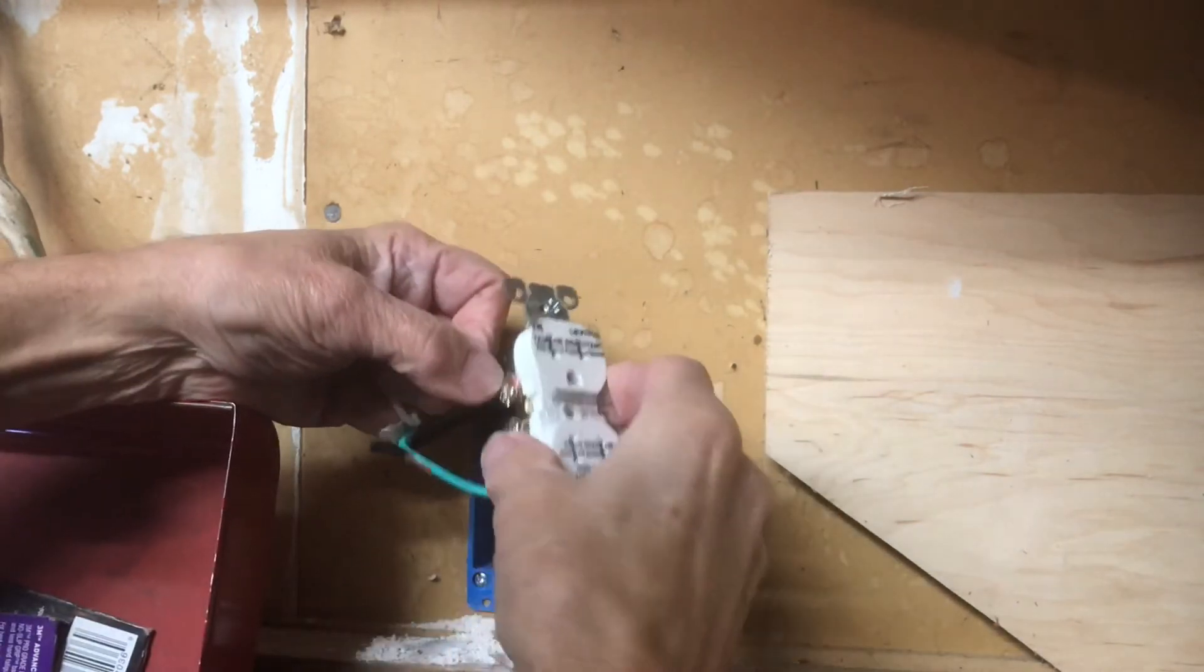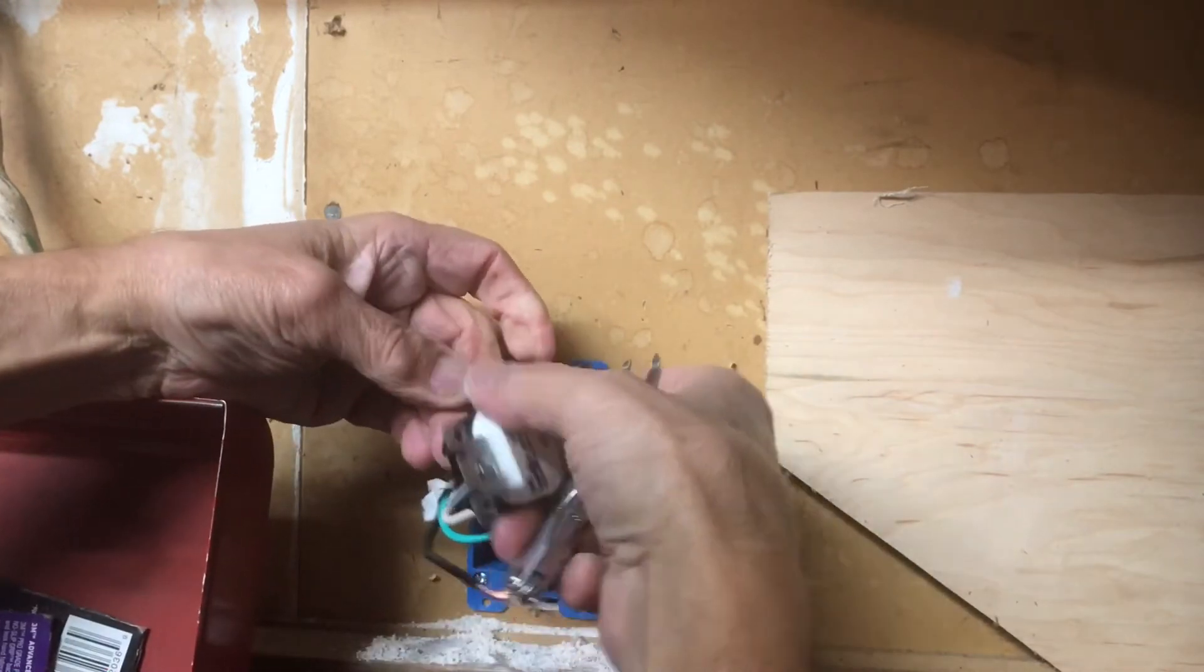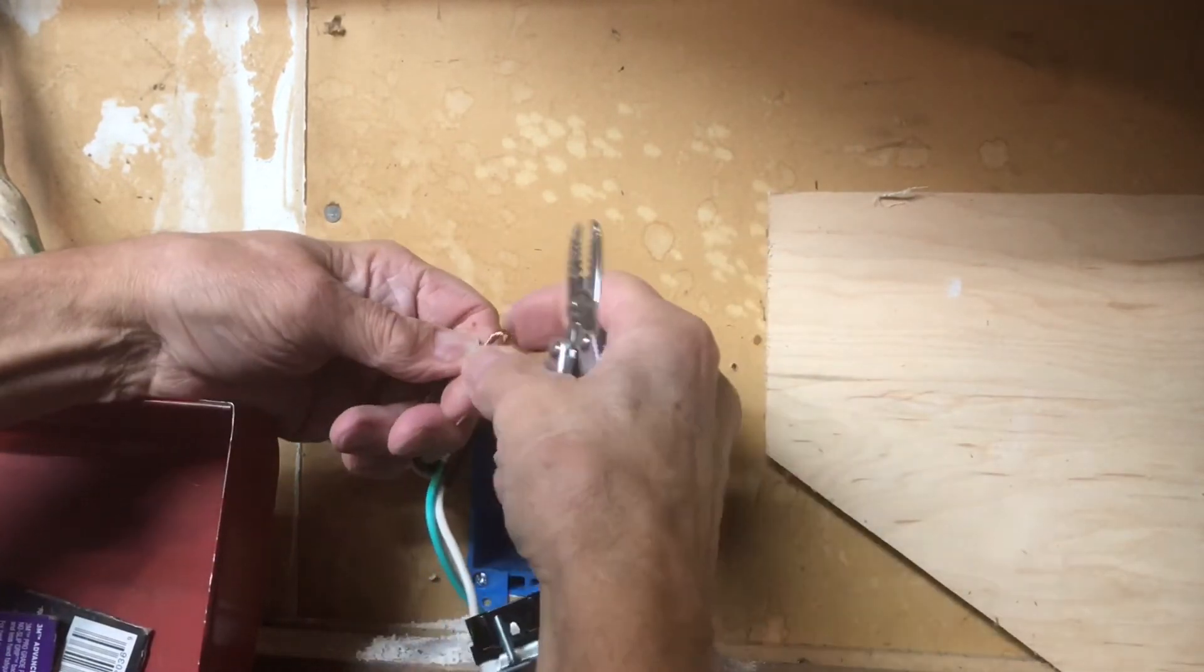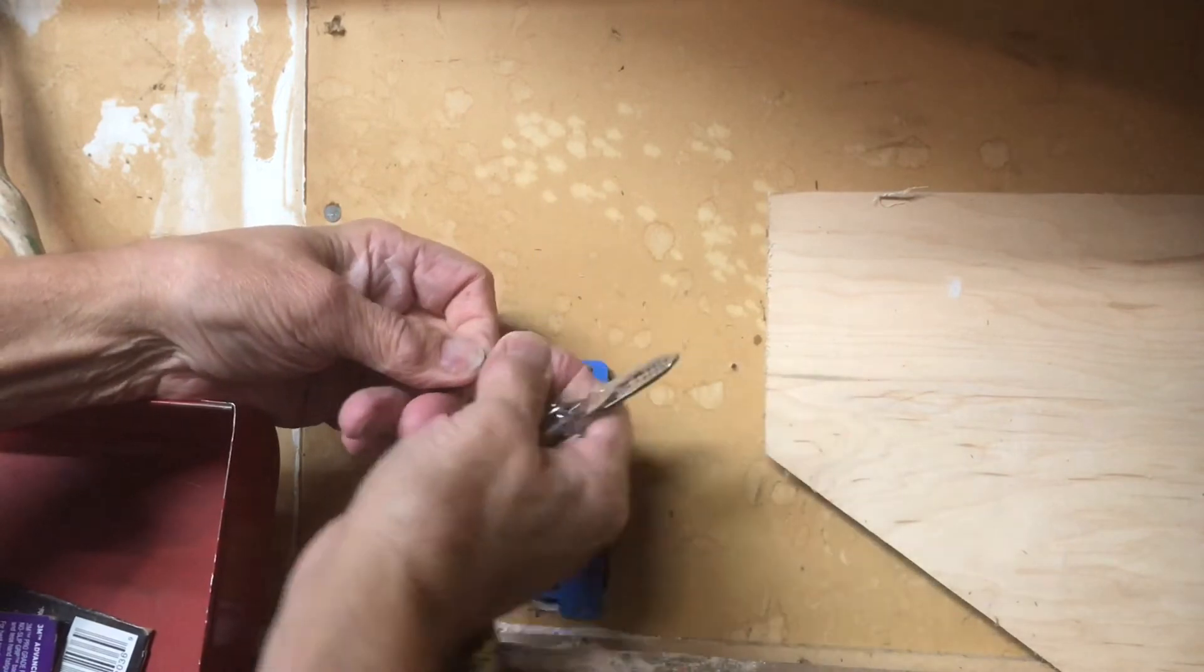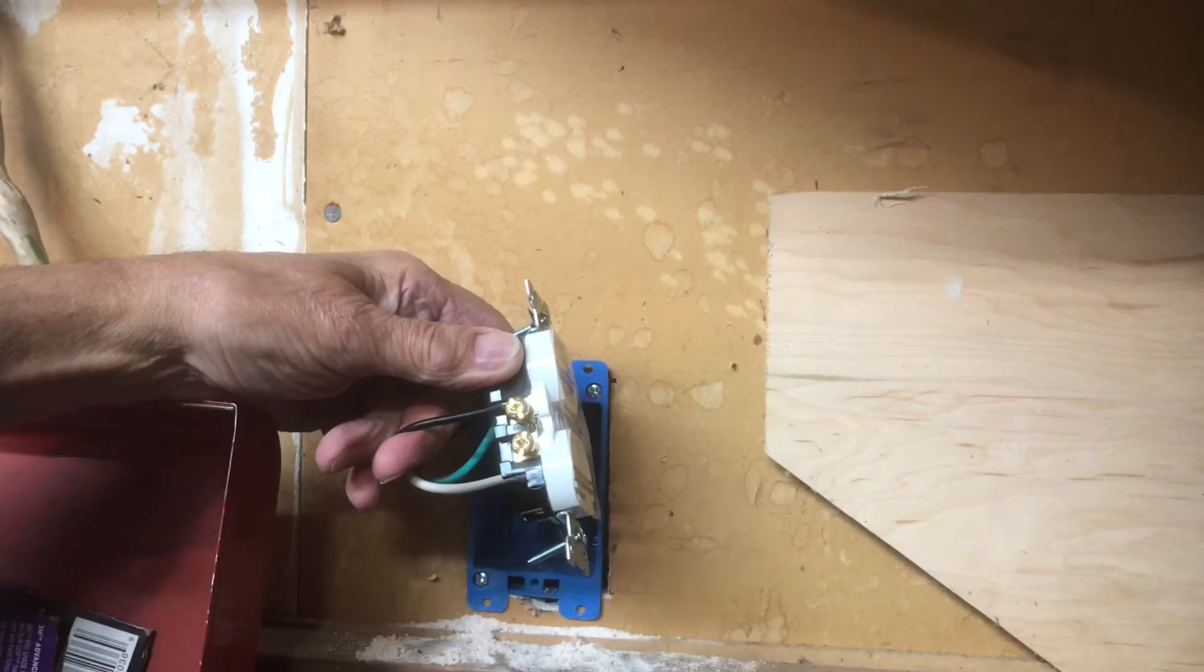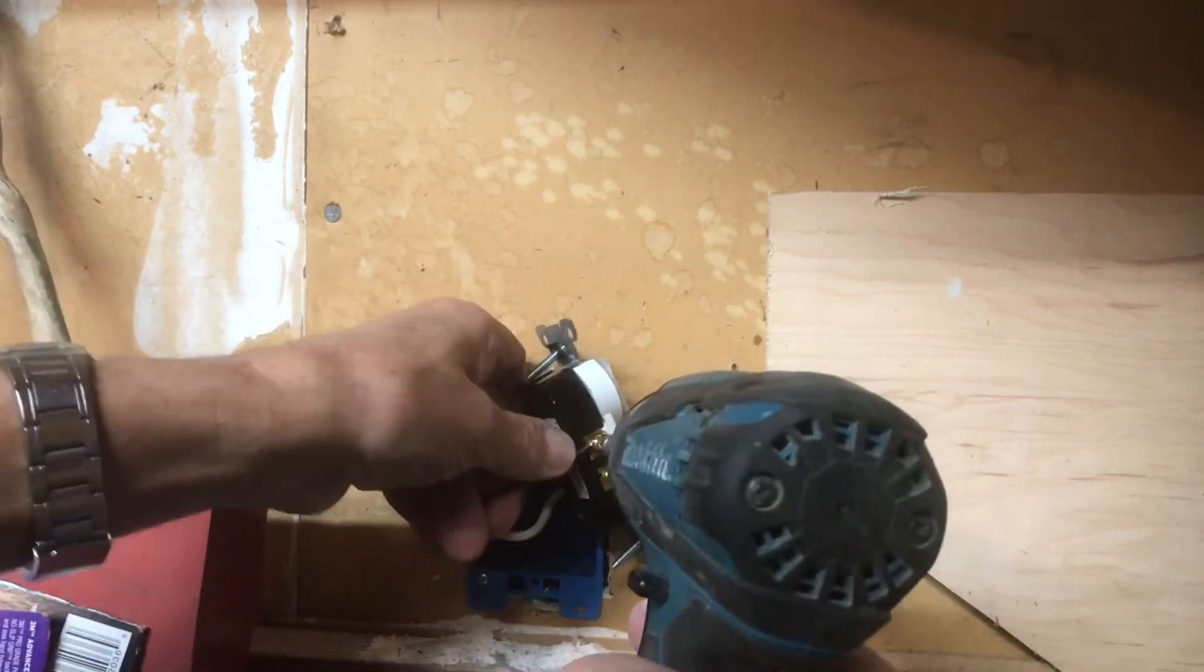Then after we get that one tightened, we'll flip her over and we'll go to the black wire which is the gold colored screw. And that's standard on all outlets. So gold is the black which is power, white is common, and the green is ground. We'll tighten that up.